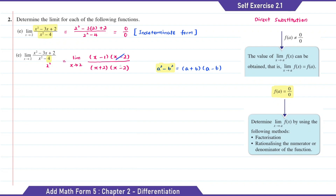So here we can cancel the x minus 2. Then we're going to get x minus 1 over x plus 2. So now we substitute x with 2, giving us 2 minus 1 over 2 plus 2, which is equal to 1 over 4.